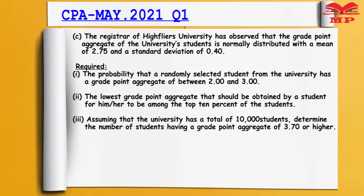Roman 2: the lowest grade point aggregate that should be obtained by a student for him or her to be among the top 10 percent of the students — three marks. Roman 3: assuming that the university has a total of 10,000 students, determine the number of students having a grade point aggregate of 3.7 or higher.